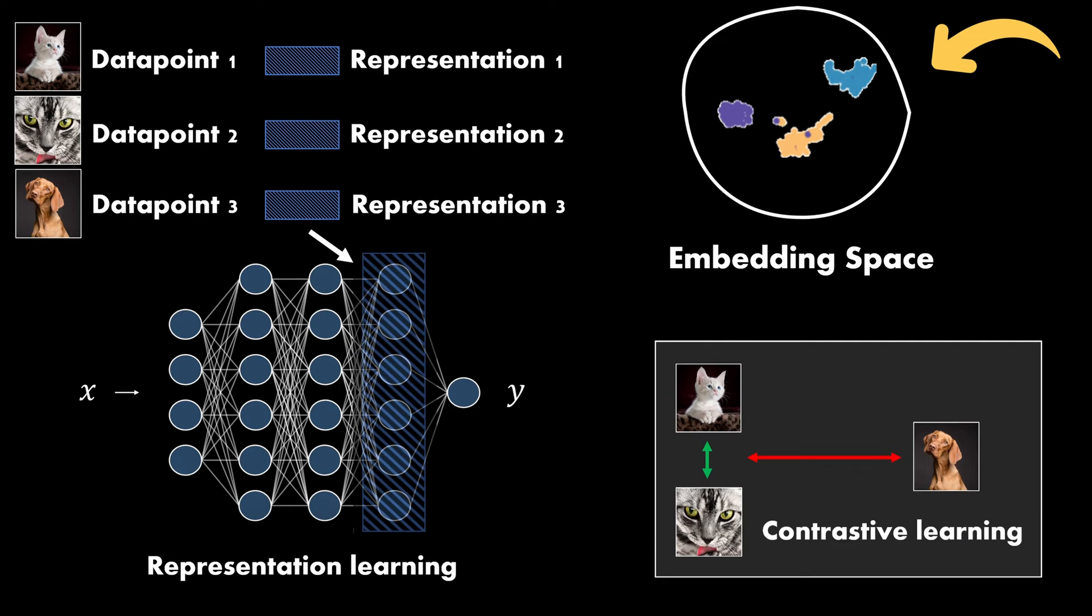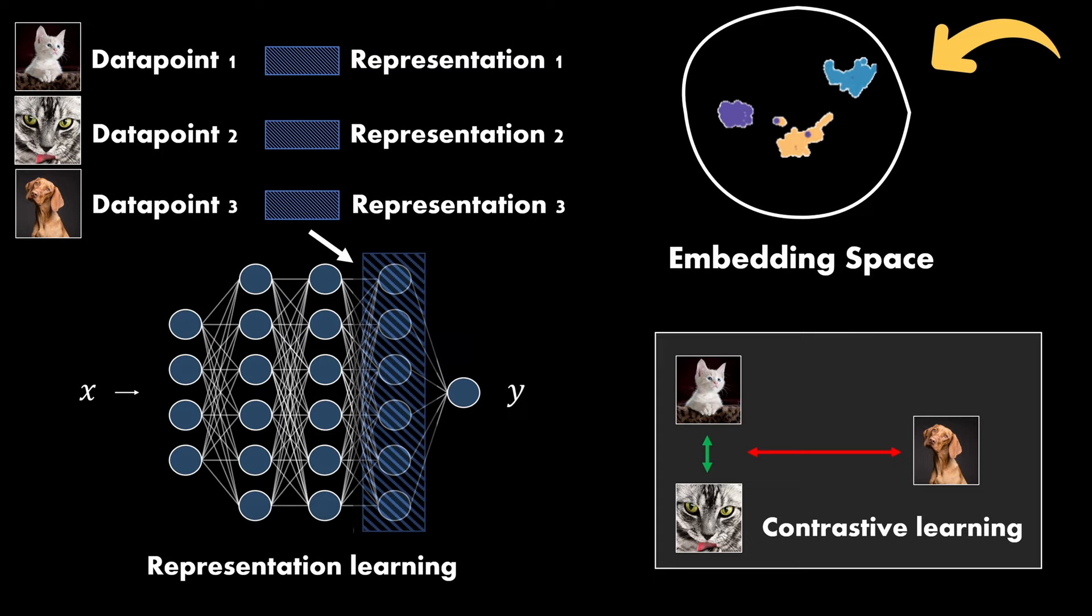With contrastive learning, we want to learn representations of data in such a way that similar data points have similar representations in embedding space. The fundamental idea of contrastive learning is instance discrimination. That means we want the model to learn to discriminate data points that belong together from those who don't.